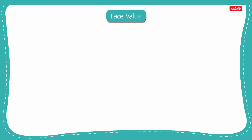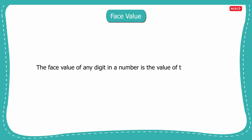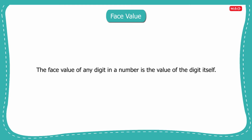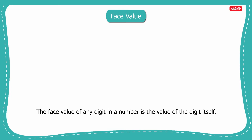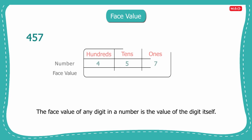Next, let us learn what is the face value. The face value of any digit in a number is the value of the digit itself. Let us take the number 457 again. The face value of seven is seven, the face value of five is five, and the face value of four is four.